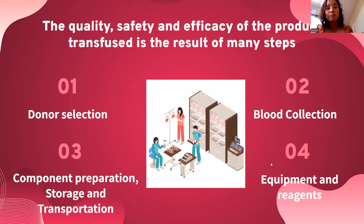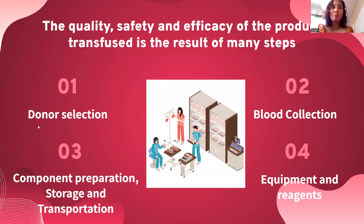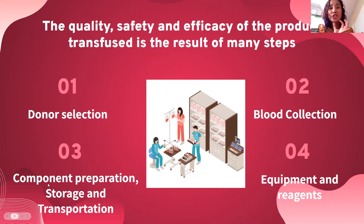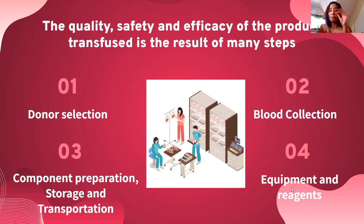Today we will only focus on four parts of blood banking. Quality, safety, and efficacy of the products transfused is the result of many steps. We will focus on how we ensure QC in selecting donors, how we collect blood, how we prepare and store our components, transport them, and how we ensure our equipment and reagents in the laboratory are working efficiently.